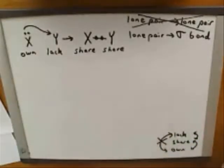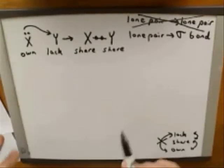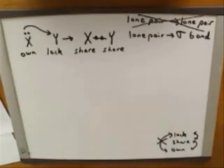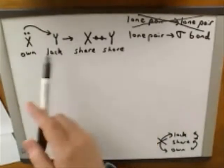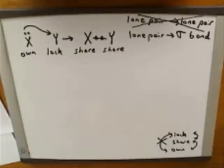I should mention one other thing here. Something I really emphasized in the introduction to this series of videos was that it was crucial to get the charges right when you're drawing the electron-pushing arrows. It's crucial to think about how the charges are changing. However, right now at this point in the videos, I'm not going to be thinking about the charges. You might have noticed that I haven't drawn any charges on any of these atoms, even though the atoms would be changing their charges as part of the reaction.